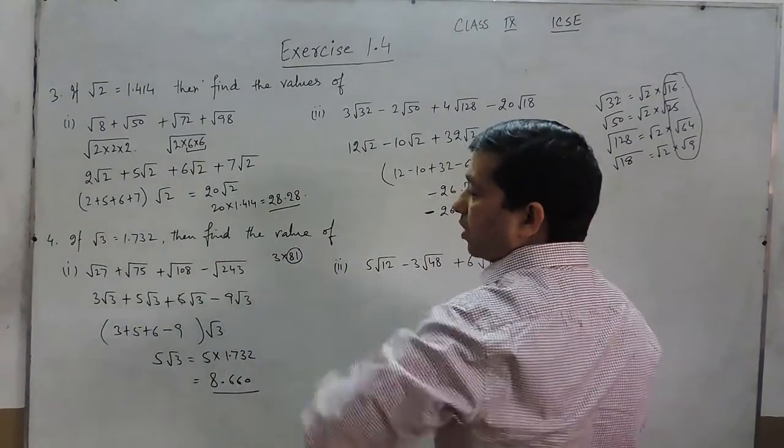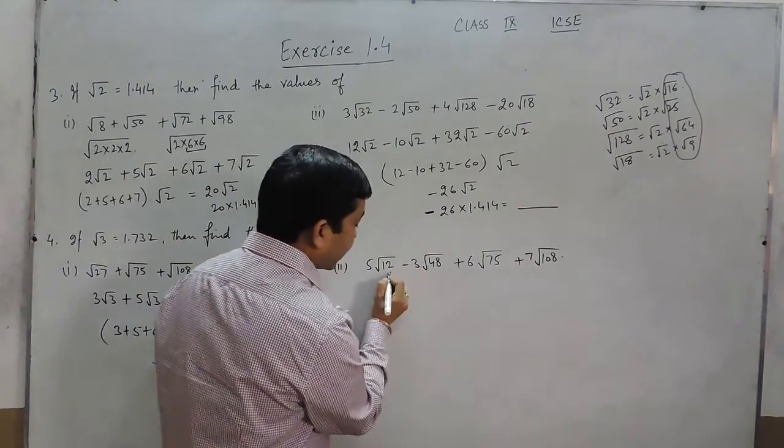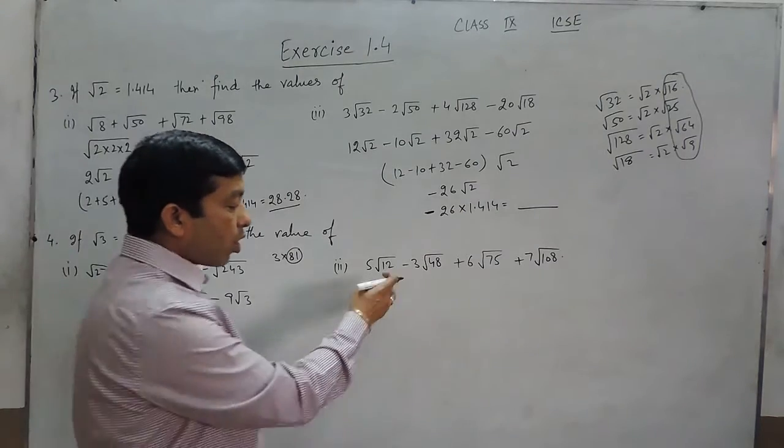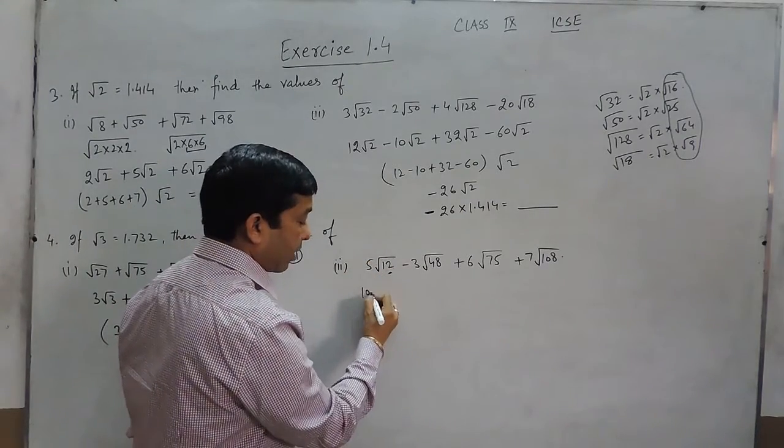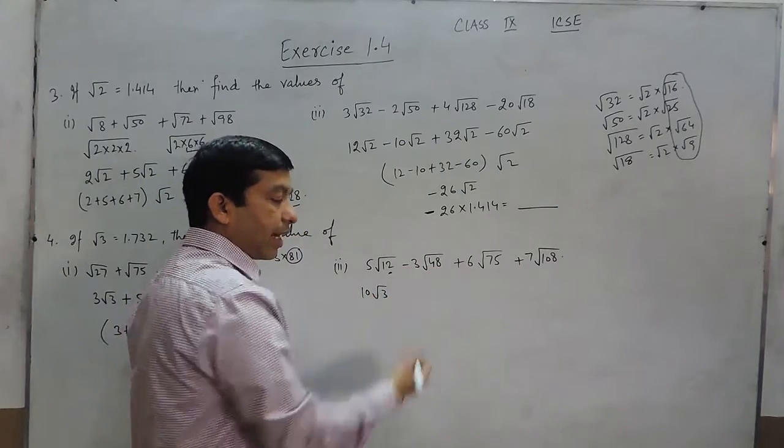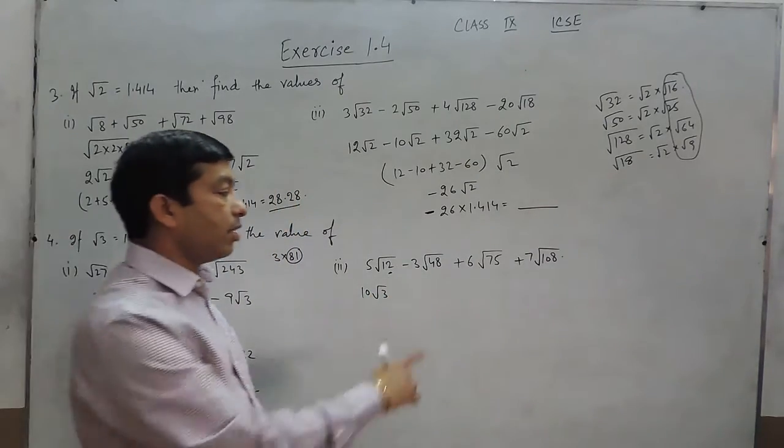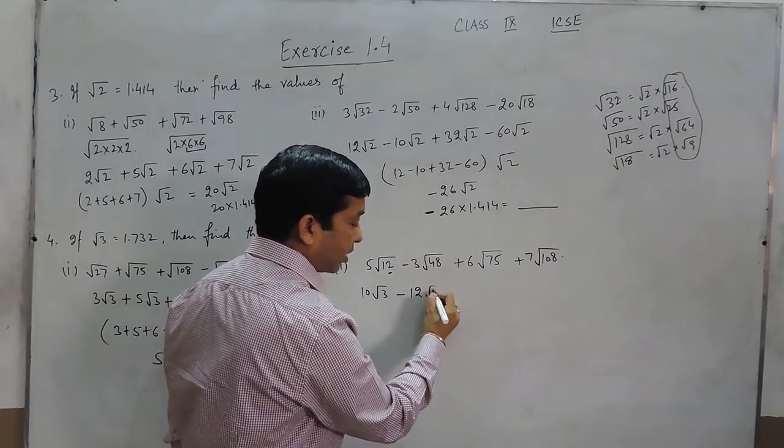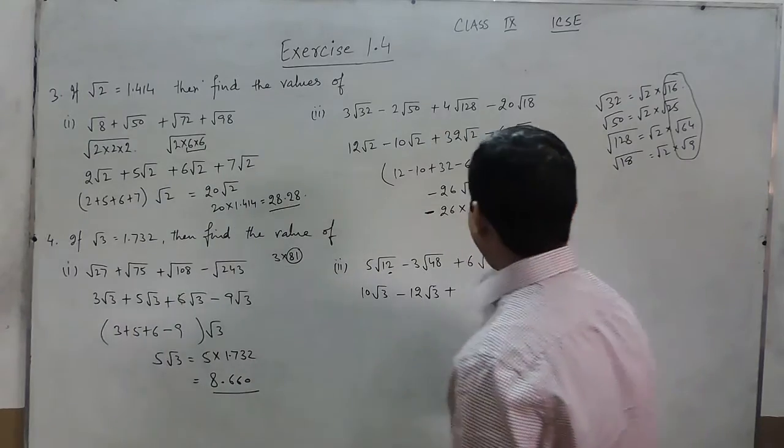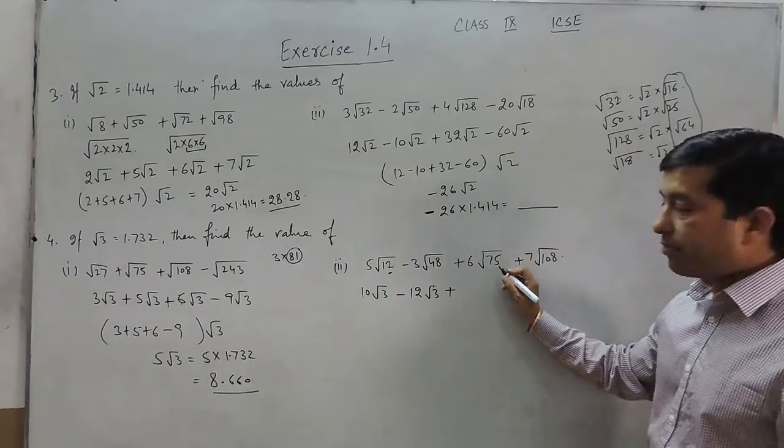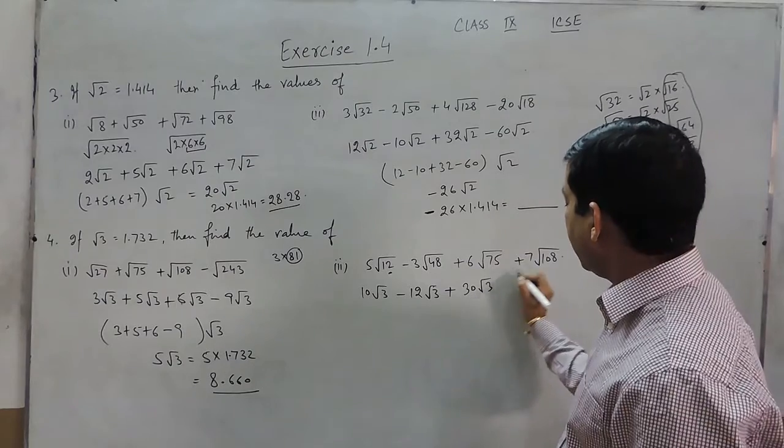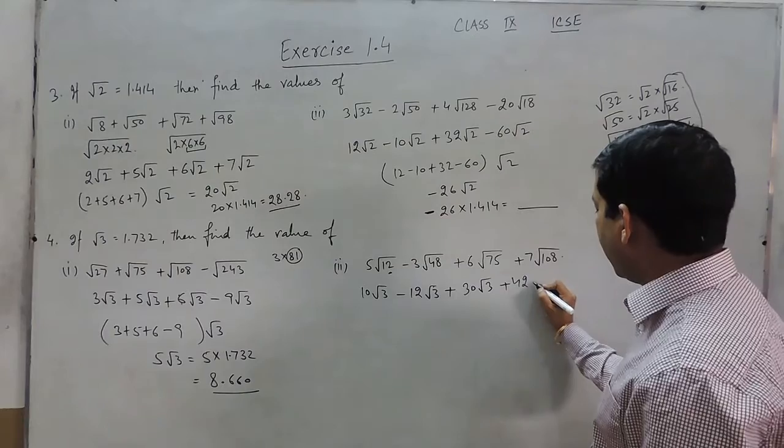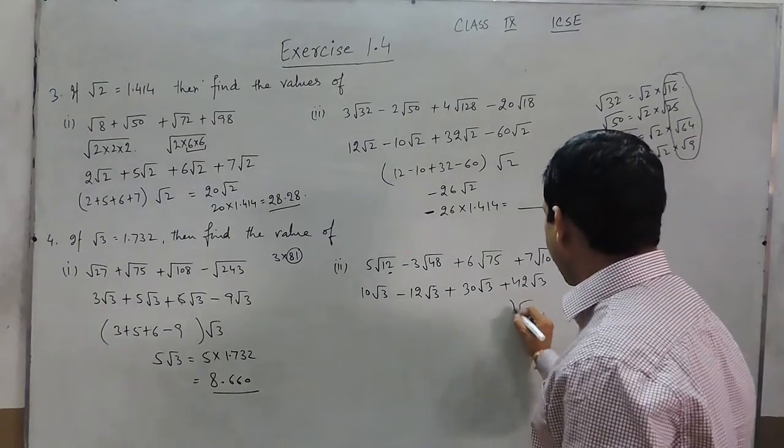Here also because we understood that √3 is given, so definitely this can be broken up into 2, 3, and 4. So 4 under root, 4 is 2 which can be taken out. This can be written as 10√3. Again here it is √3 × 16, so 16 has 4 under root, so this is 12√3. Plus it is 3 × 25, so comes out to be 30√3. It is 3 × 36 where I can write it as 42√3.